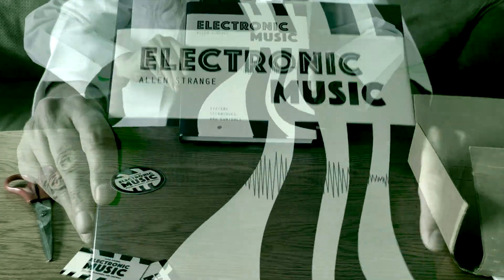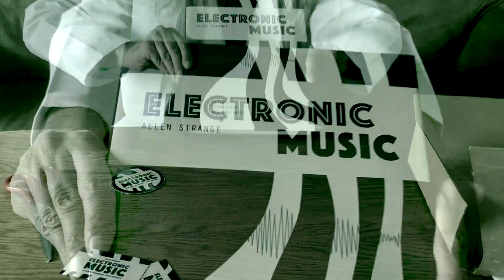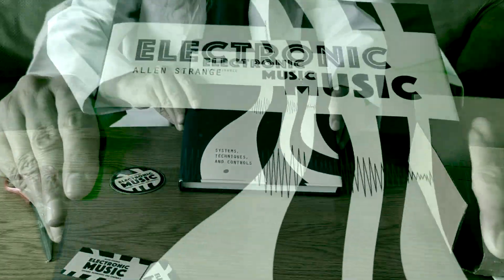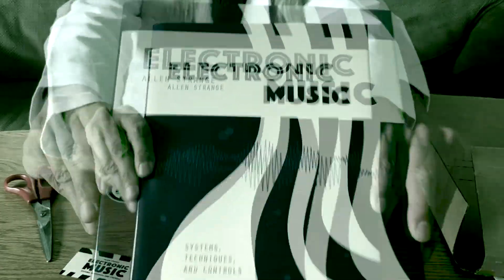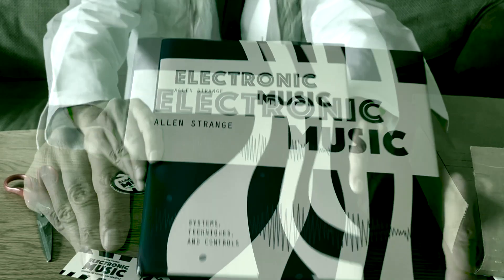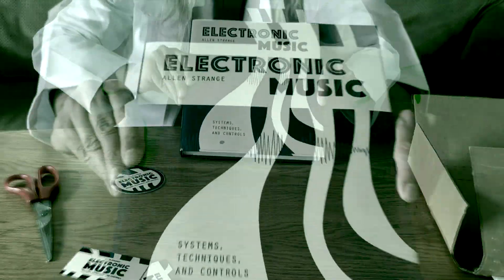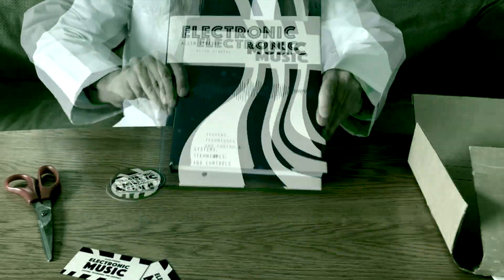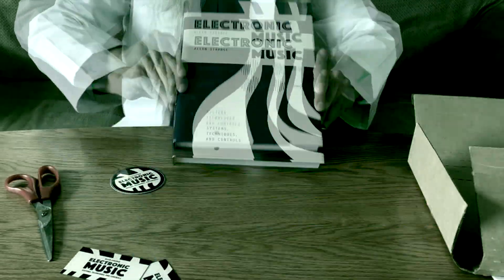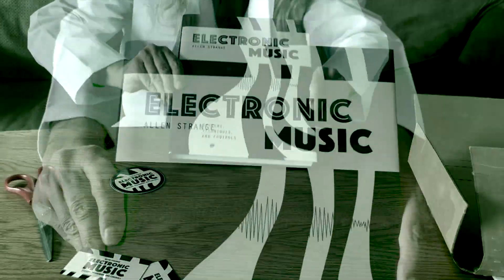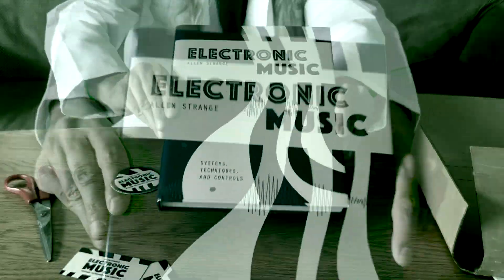Originally written in 1972 and updated for a 1983 reprint, Alan Strange's text on electronic music has long been considered the Bible of modular synth patching. In my new series about the book, I hope to delve into his techniques and use the examples as a springboard for even more creative patching.